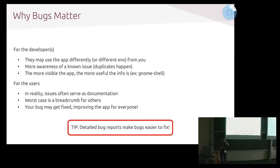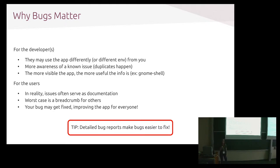Bugs matter for a lot of reasons. They matter to the developer because they might not be aware — they use the software in a different way than the user might. Duplicates do happen; don't be afraid of them. Do your best to try and see if the bug has already been filed, but if you don't find it, then go ahead and file a quick bug. The more visible the app is, the more useful that bug you might have found is.